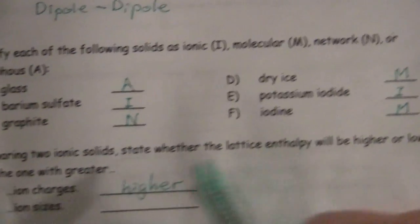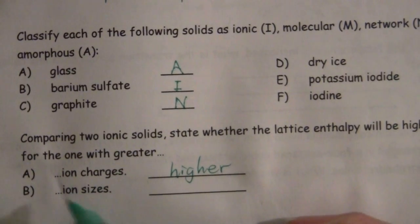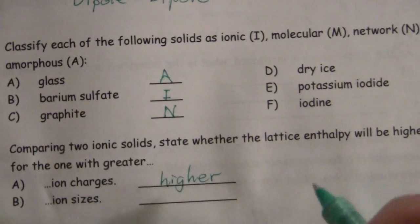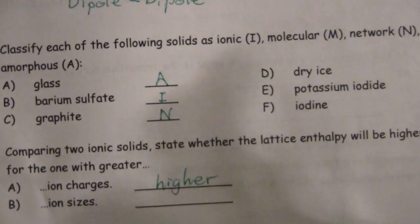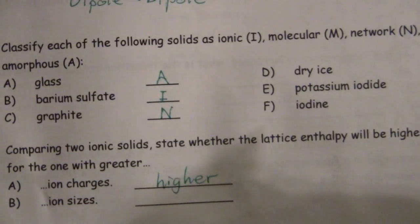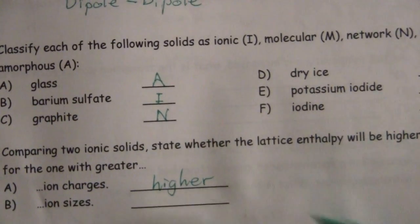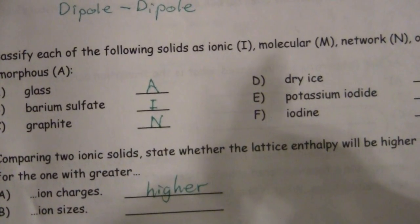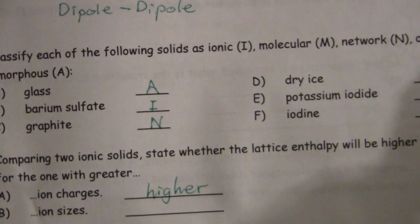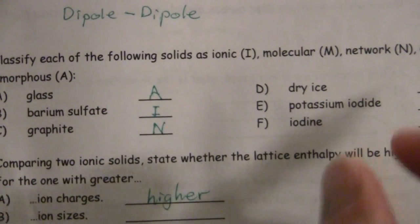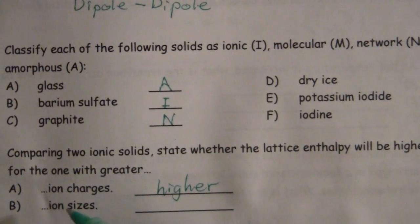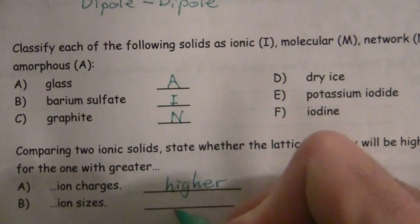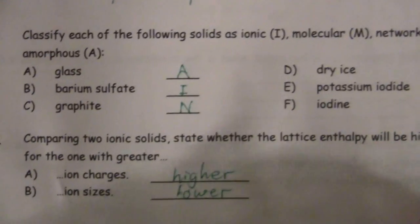And for the one that has greater ion sizes, that's where you have two ions, say rubidium and iodide. The rubidium ion and iodide ion are both very large and so they can't get as close to each other as say sodium and fluoride. Those are smaller ions, they can get closer to each other. And since the larger, the one with greater ion sizes can't get as close together, the lattice enthalpy will be lower.